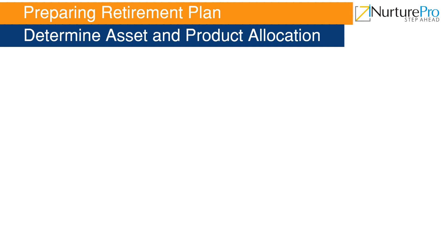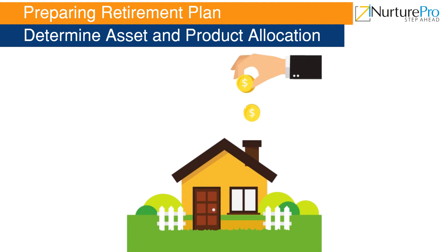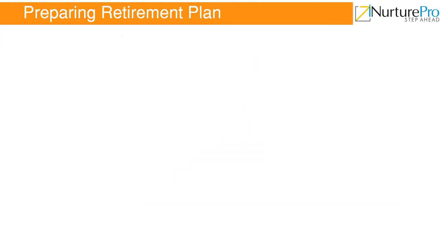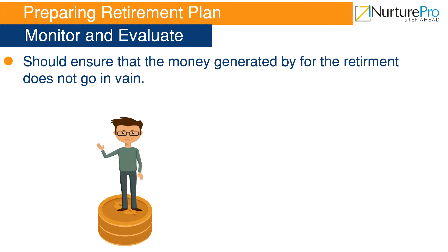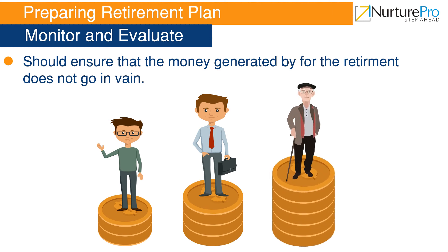Next, the individual should determine in which assets and products he or she wants to invest so as to accumulate money for retirement. An individual should also monitor and evaluate his or her retirement plan after every three months, as any change in the stock market, government policy, etc., will have a direct impact on investments made for retirement. He or she should take the required actions to ensure that the money generated for retirement does not go in vain.